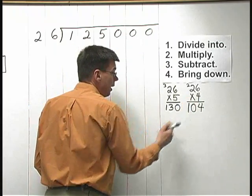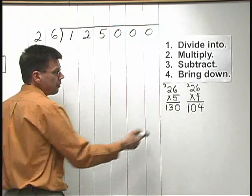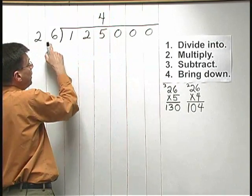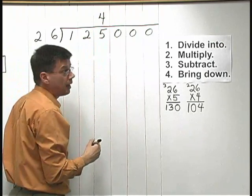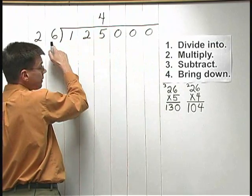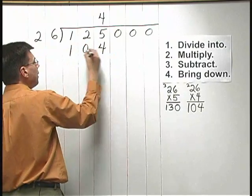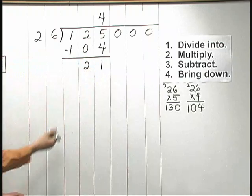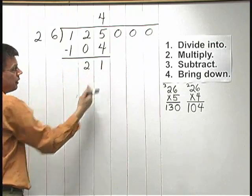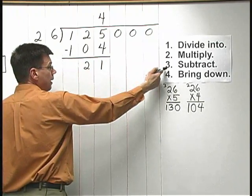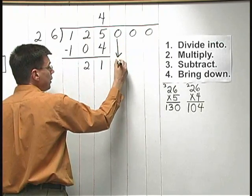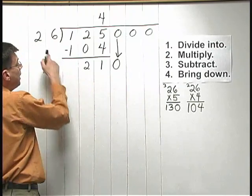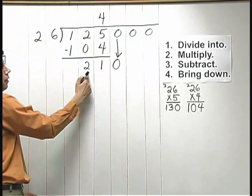104 is the product, so 26 goes into 125 four times. I write the 4 directly above the 5 — that's my divide-into step. Next I multiply: 4 times 26 is 104. Then I subtract: 5 minus 4 is 1, 2 minus 0 is 2, 1 minus 1 is 0 — so I have 21 after I subtract. Right after the subtract step comes the bring down step. I bring down the next digit, the 0, giving me 210. After the bring down step, I go back up to the divide-into step.